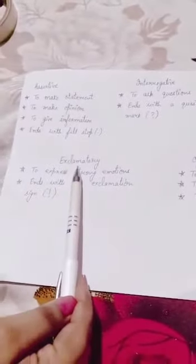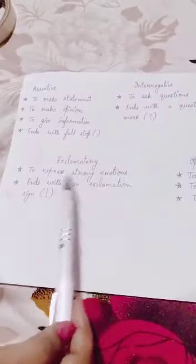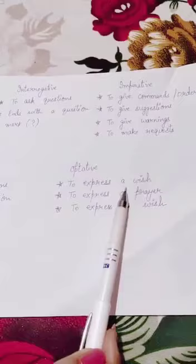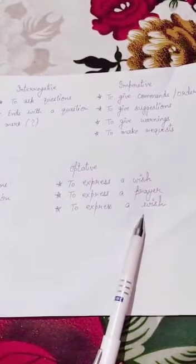Exclamatory sentences are used to express strong emotion, ends with an exclamation sign. Optative sentences are used to express a wish, a prayer or curse.